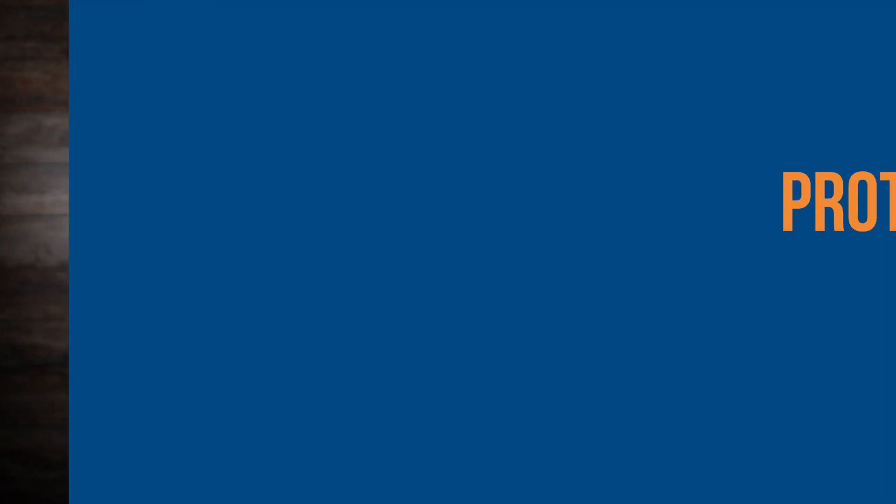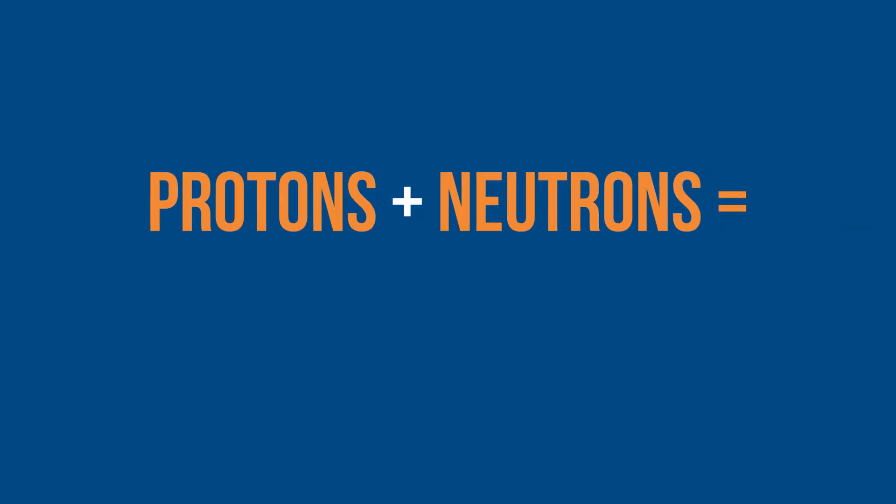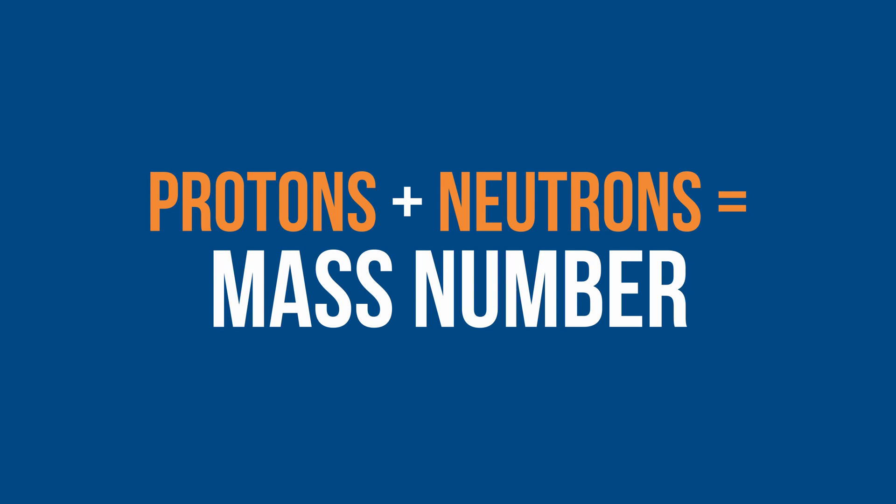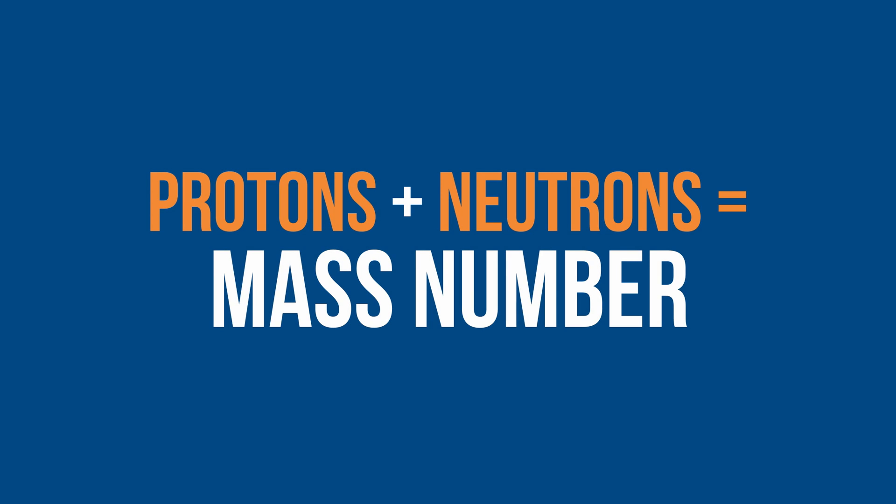To find the mass number of an element, you add the number of protons and neutrons together — protons plus neutrons equal mass number. This gives us names like carbon-12 or carbon-14, which are types of carbon atoms used in carbon dating.